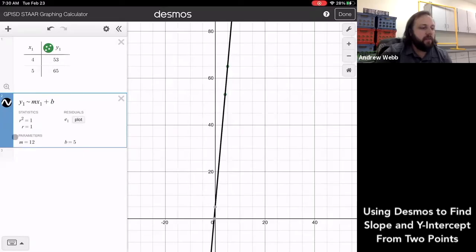And down here where it says parameters, this gives me my slope, which is the M, and my Y intercept, which is that B.